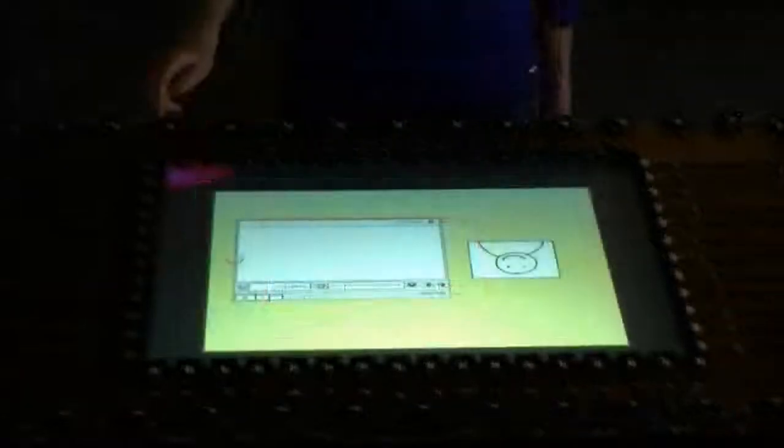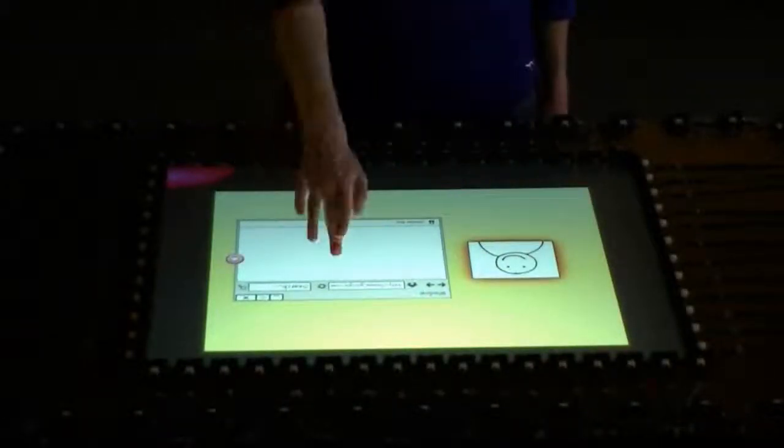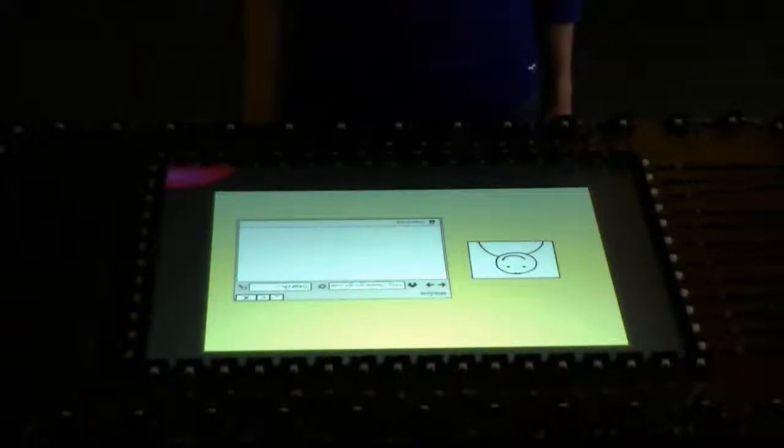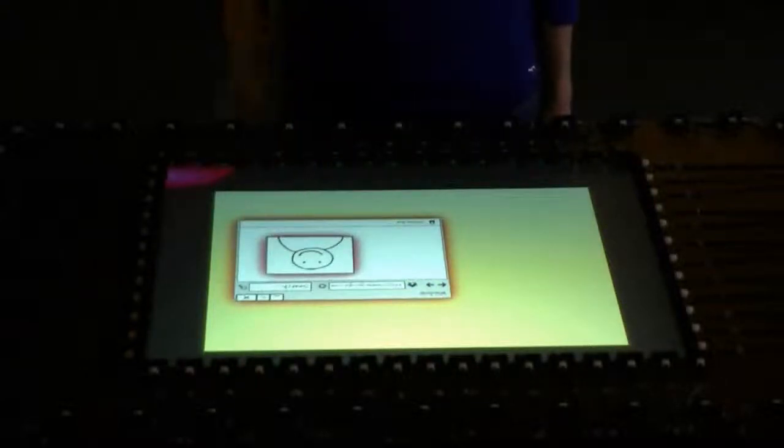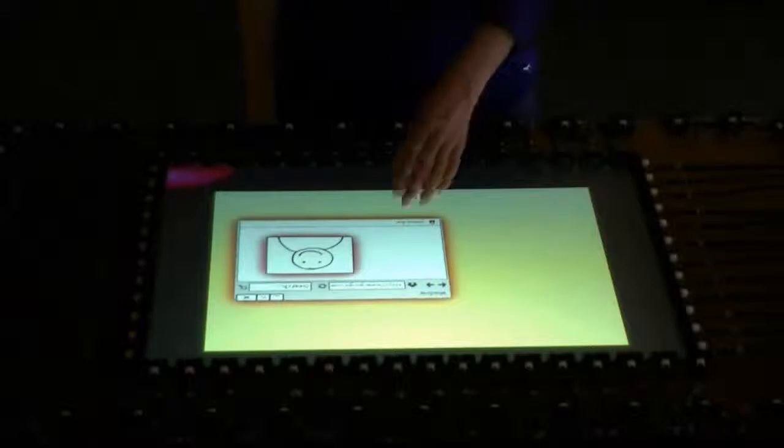Hand choice is also used to differentiate between group and individual manipulations. If a user has created a group of components and only wants to manipulate one element within the group, they can drag that element with their right hand. If the user wants to manipulate the entire group, they can do so with their left hand.